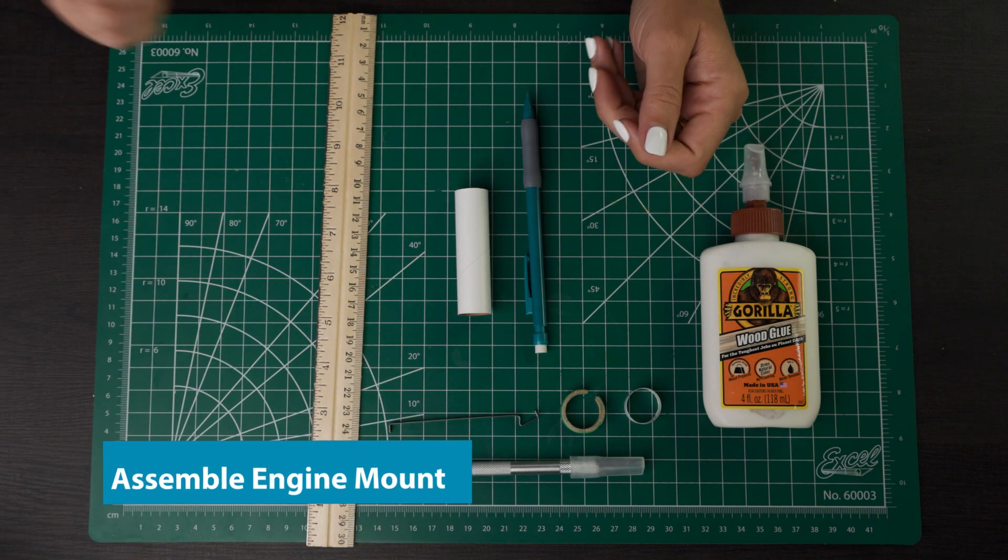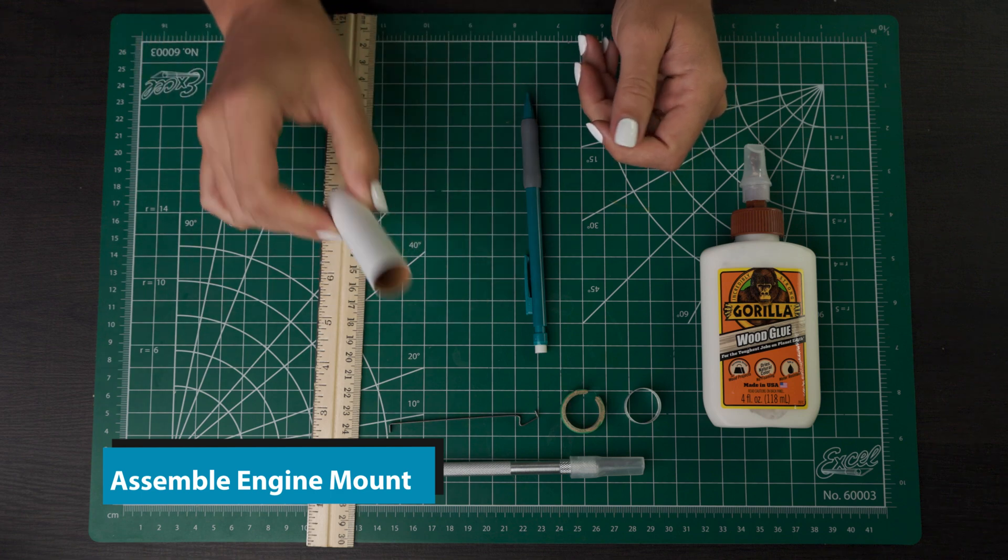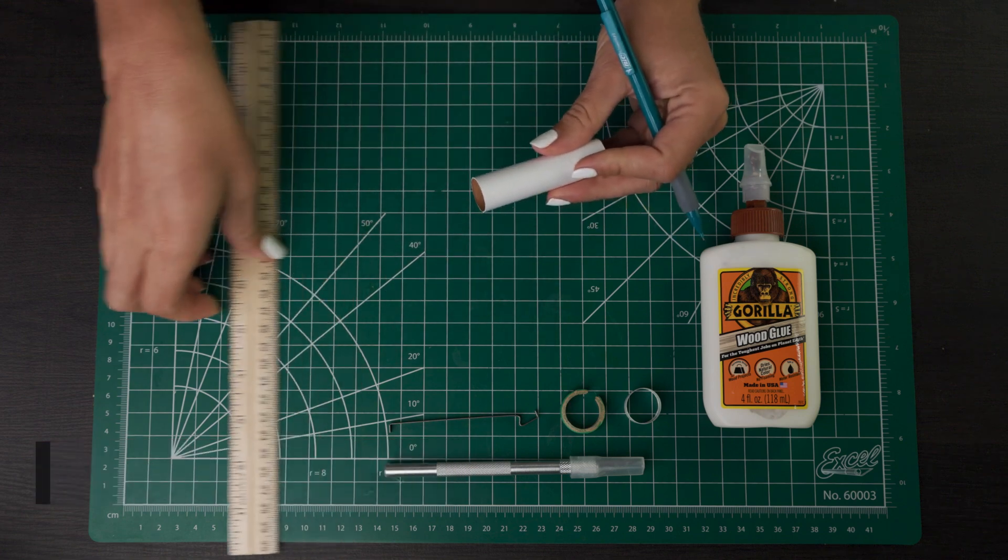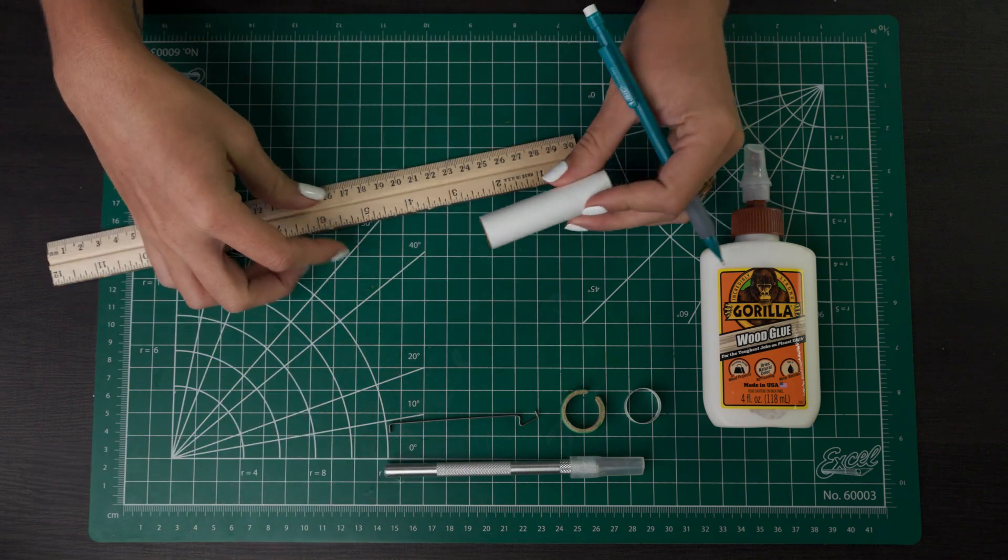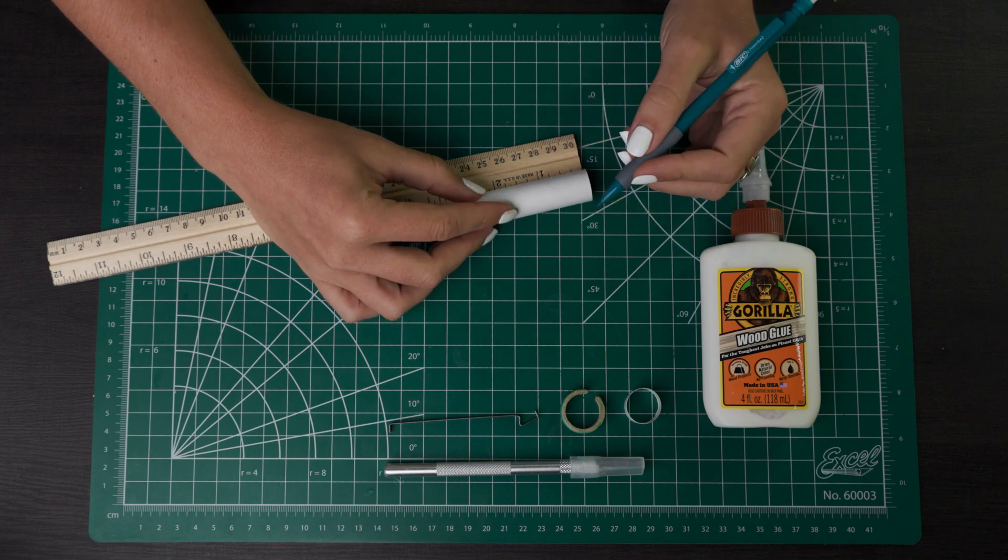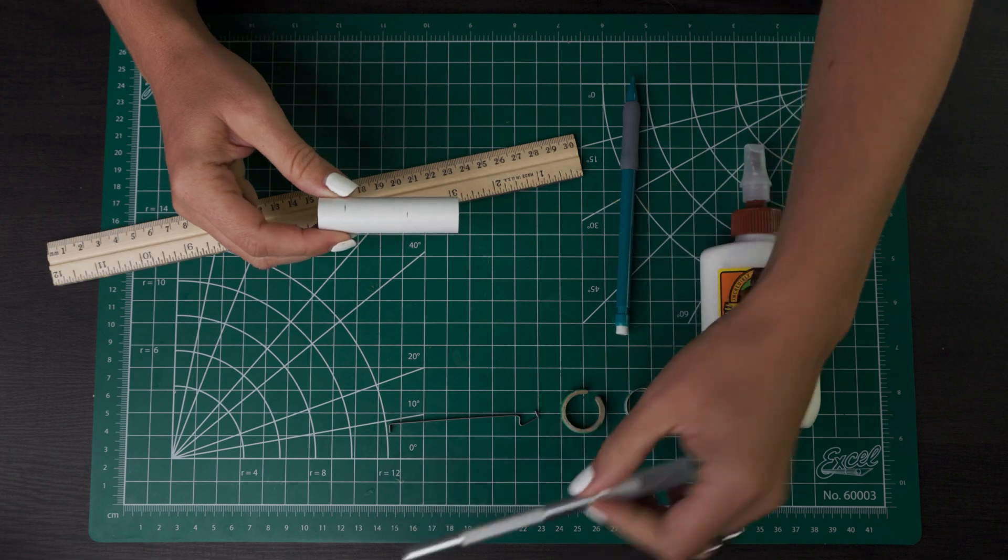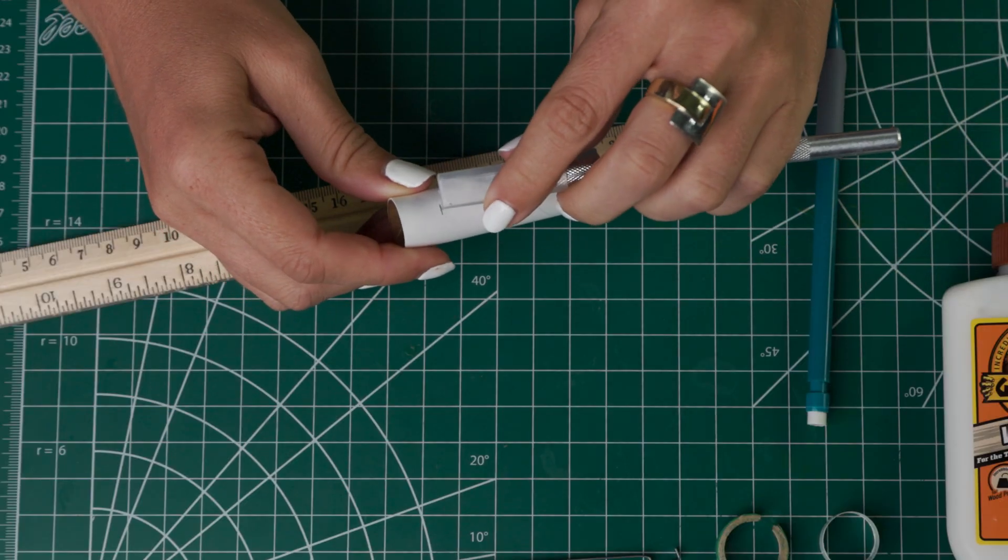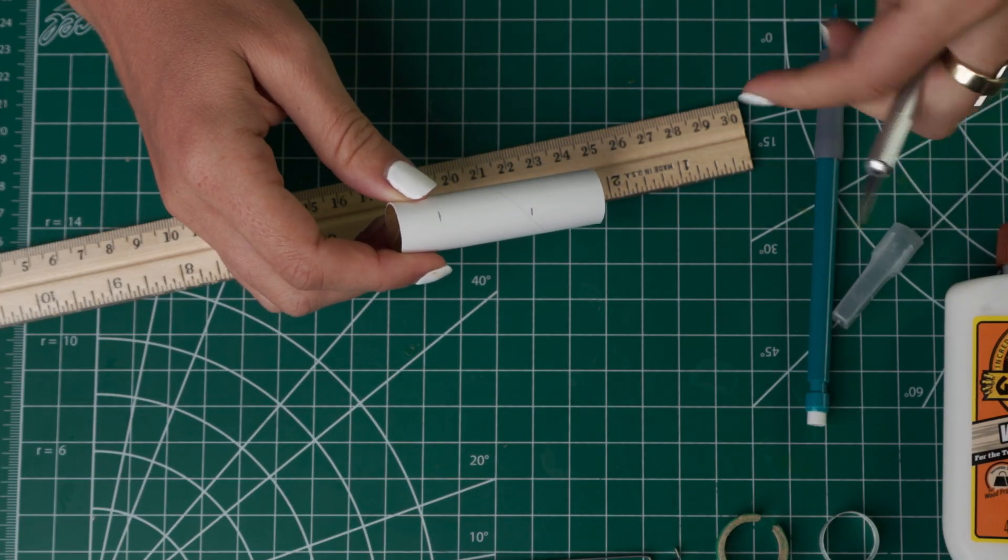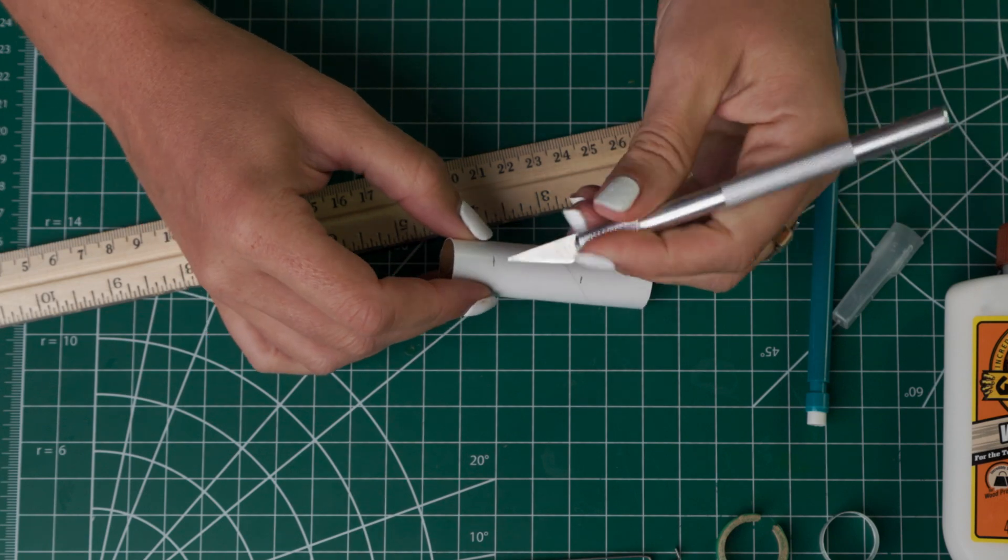First thing we'll be doing is assembling the engine mount. So get your engine mount tube and then we are going to make some marks on it at one inch and two and a quarter inches. Once you have those, you'll take your hobby knife and make a cut at the mark you did at two and a quarter inches. The cut can be about an eighth of an inch wide.